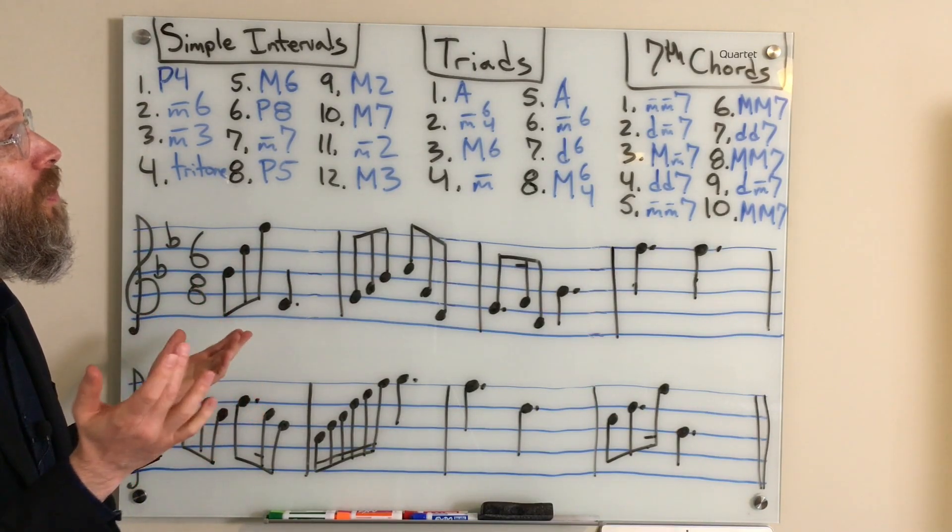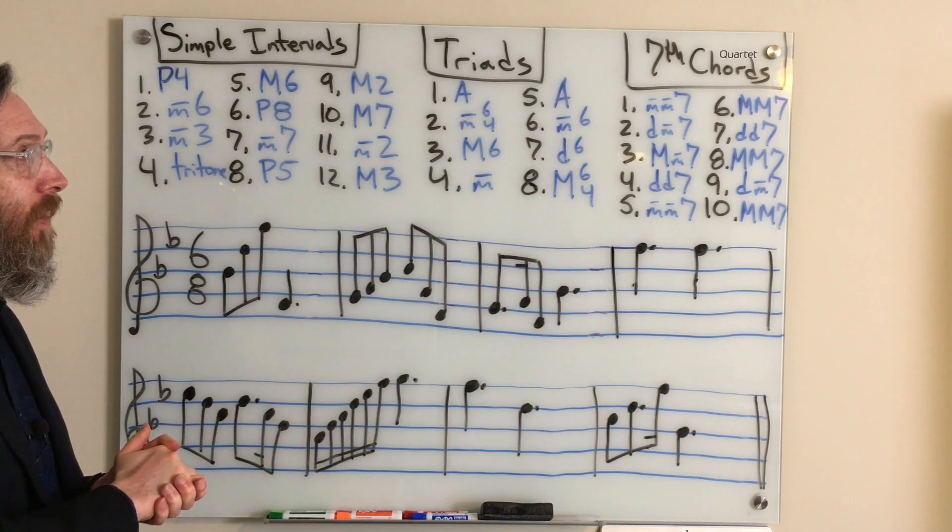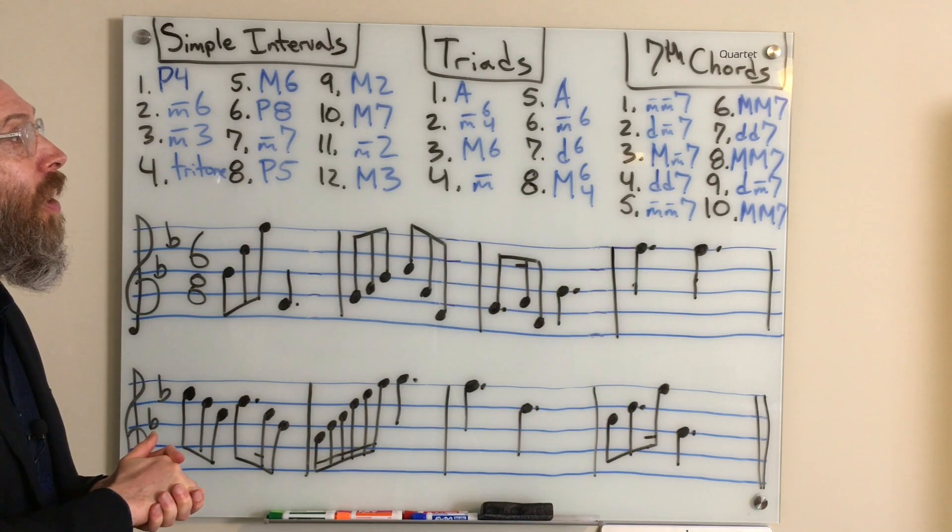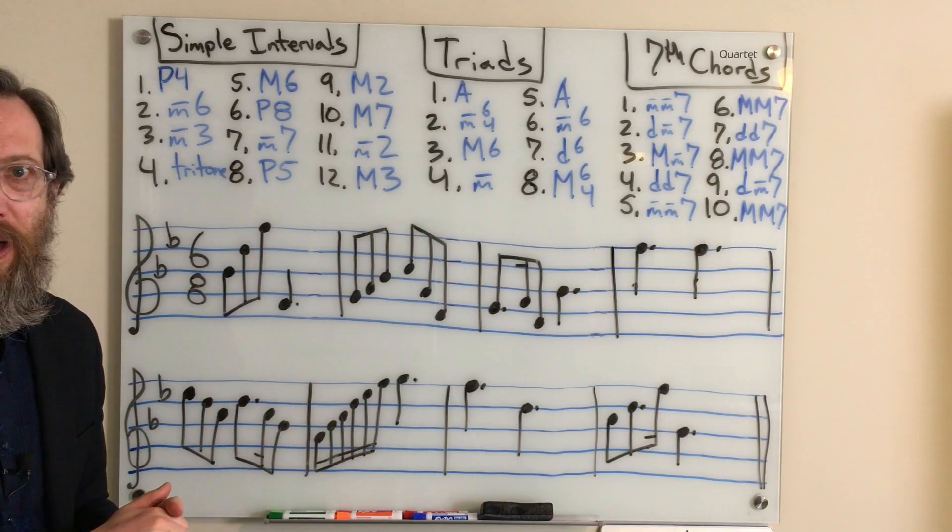For our root position 7th chords. Number 1 was a minor minor 7. 2 was a diminished minor 7. 3 was a major minor 7. 4 was a diminished diminished 7. 5 was a minor minor 7.